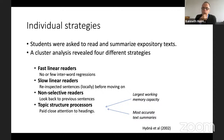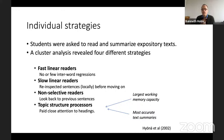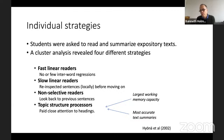People have also noticed individual differences in reading with longer texts. A really nice study by Jukka Hyena from 2002 showed with cluster analysis that there were four major types of readers: fast linear readers who go through the text quickly and never return; slow linear readers who re-inspect sentences locally before moving on; non-selective readers who looked back at previous sentences; and the best ones — topic structure processors who paid close attention to headings and keywords. This last group had the best working memory capacity and gave the most accurate text summaries.